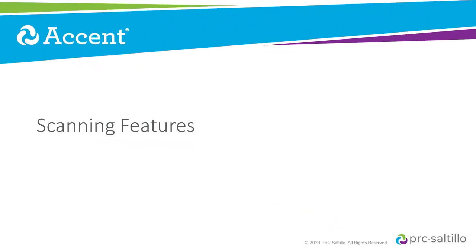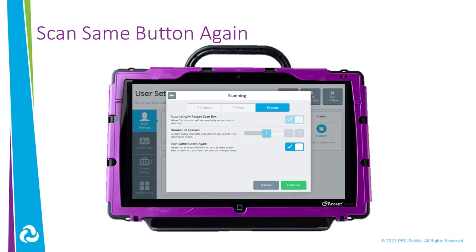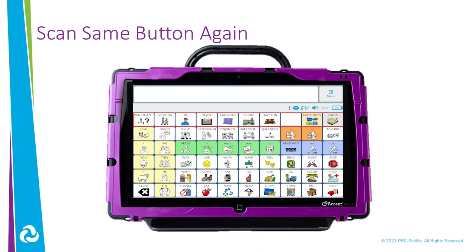In Update 1.24, there are some new scanning features. In the scanning settings, you can turn on Scan Same Button again. With this enabled, you can repeat a word or letter on the keyboard without having to start your scan from the beginning. This is great for selecting a pronoun or spelling a word with a double letter.